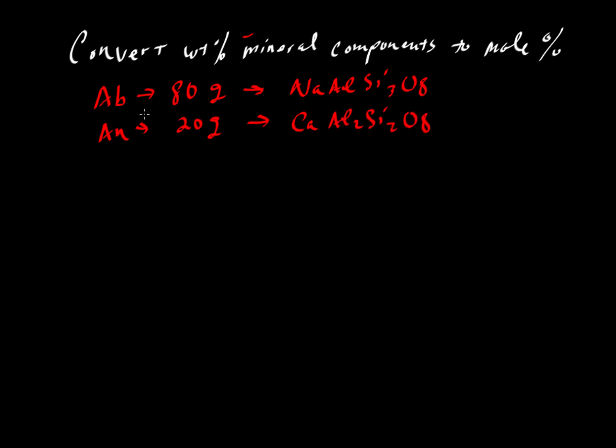Well, if we weigh out 80 grams of one and 20 grams of another, we can write a formula. The way we express this is this would be albite 100 because it would be 100% albite.